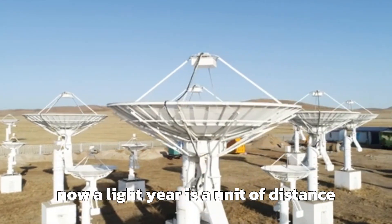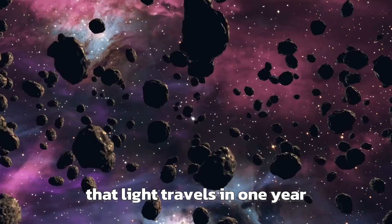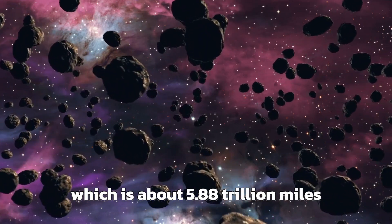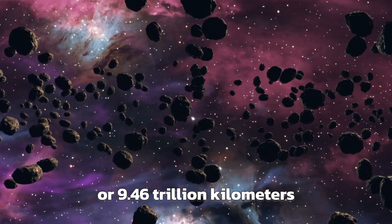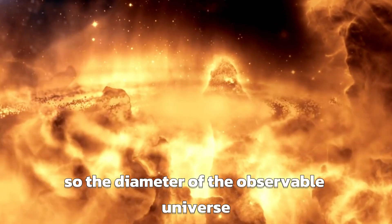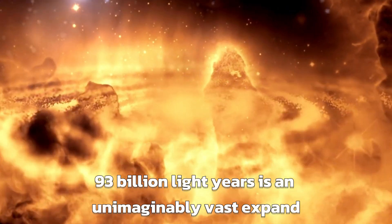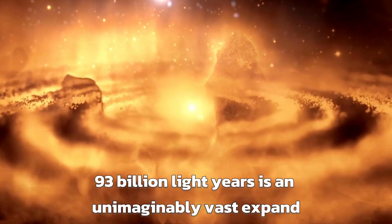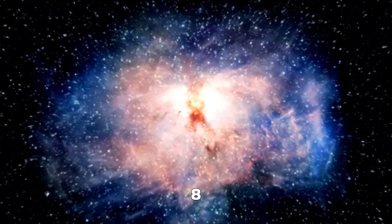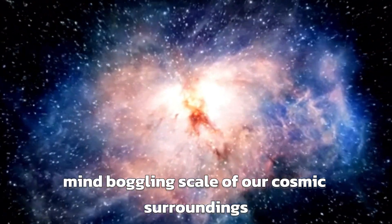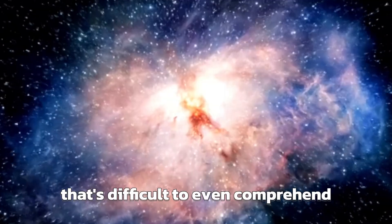Now, a light-year is a unit of distance that light travels in one year, which is about 5.88 trillion miles or 9.46 trillion kilometers. So the diameter of the observable universe, 93 billion light-years, is an unimaginably vast expanse. This is a mind-boggling scale of our cosmic surroundings that's difficult to even comprehend.